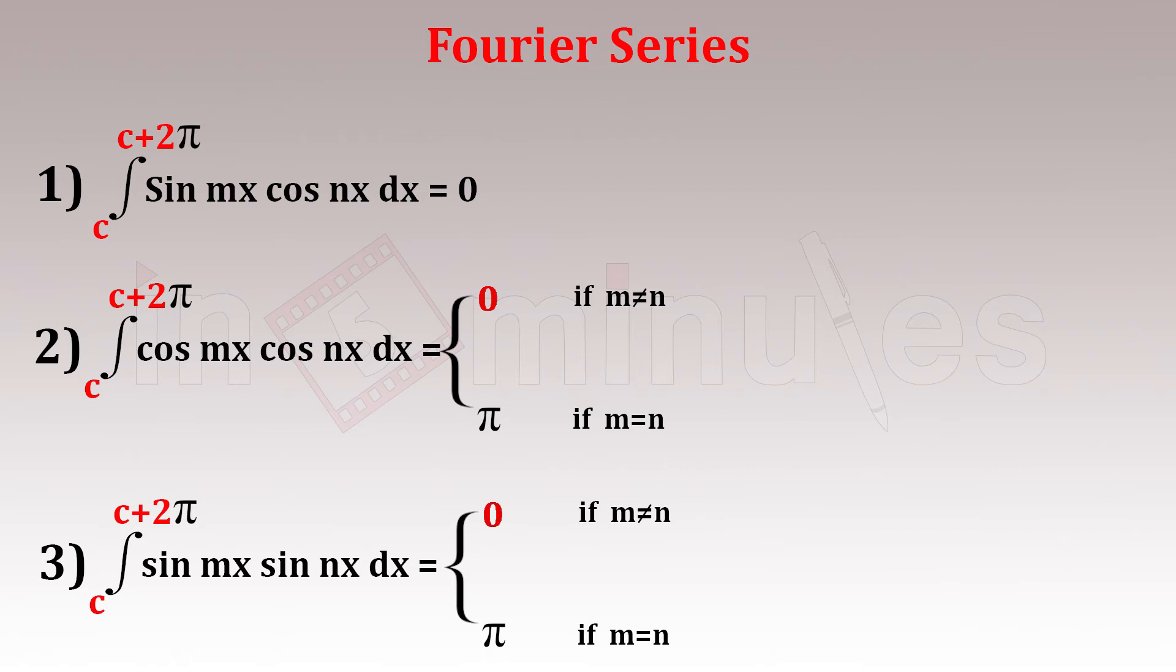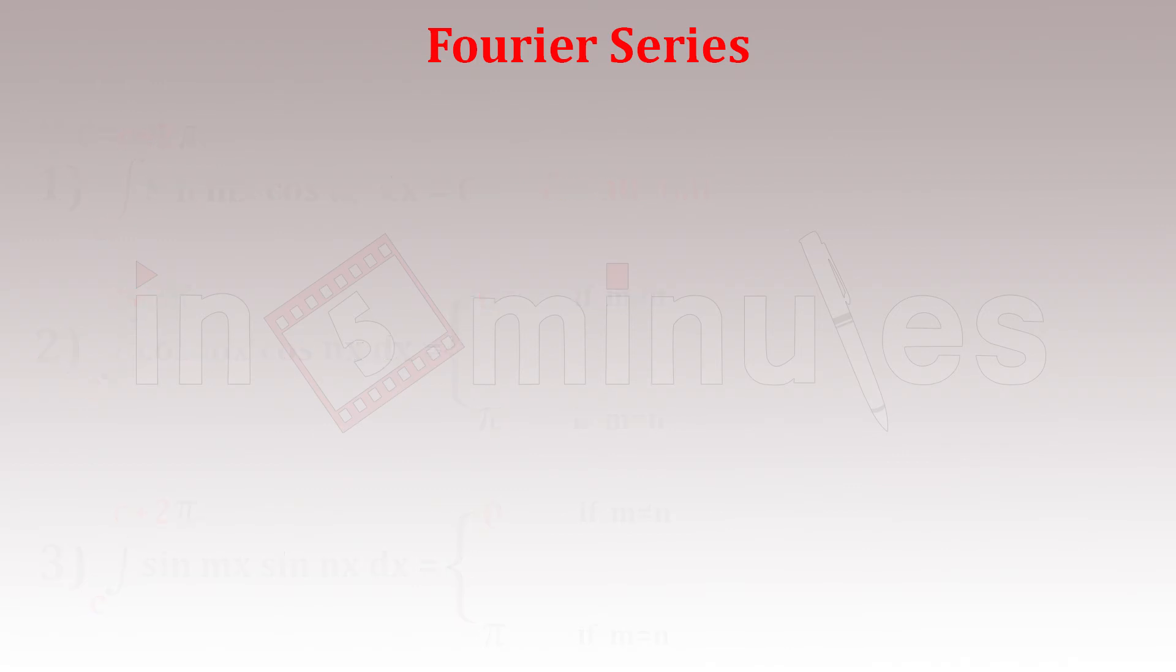Now, this first formula is 0 for all m, n. These formulas we will be using in trigonometric Fourier series. Now, the same formulas we can write if I substitute the value of C as minus π, so the range becomes minus π to π.